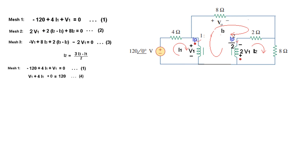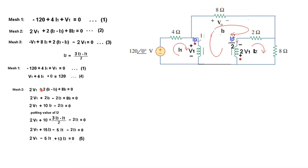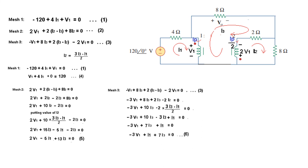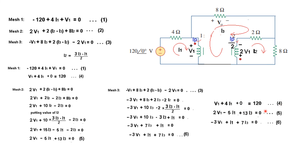Rewriting mesh 1 in order: V1 + 4I1 + 0·I3 = 120. This is equation 4. For mesh 2, substituting the value of I2 and simplifying, we obtain equation 5 in terms of V1, I1, and I3. For mesh 3, substituting I2 and simplifying similarly gives us equation 6. We can now summarize equations 4, 5, and 6 and proceed to solve them.